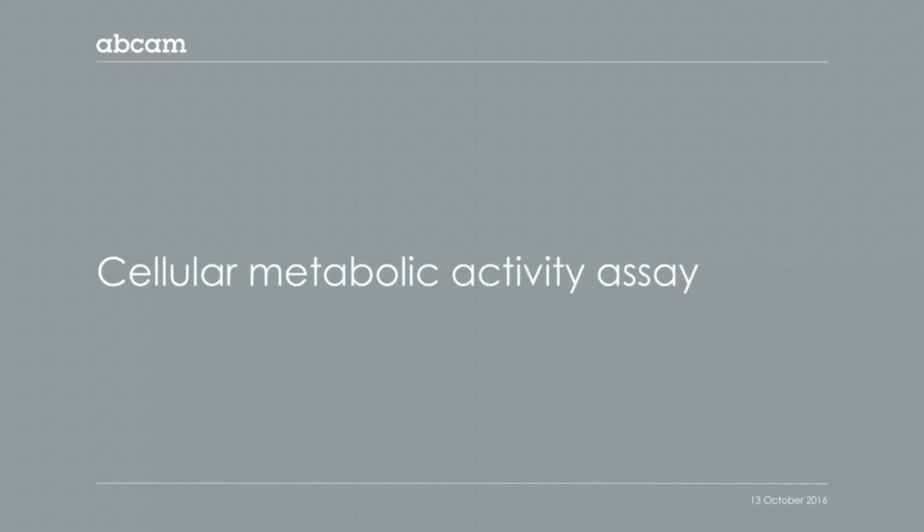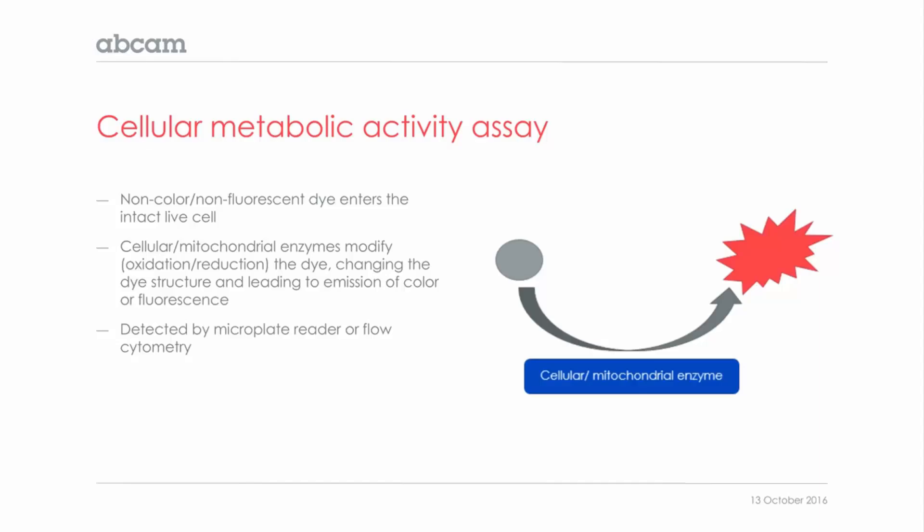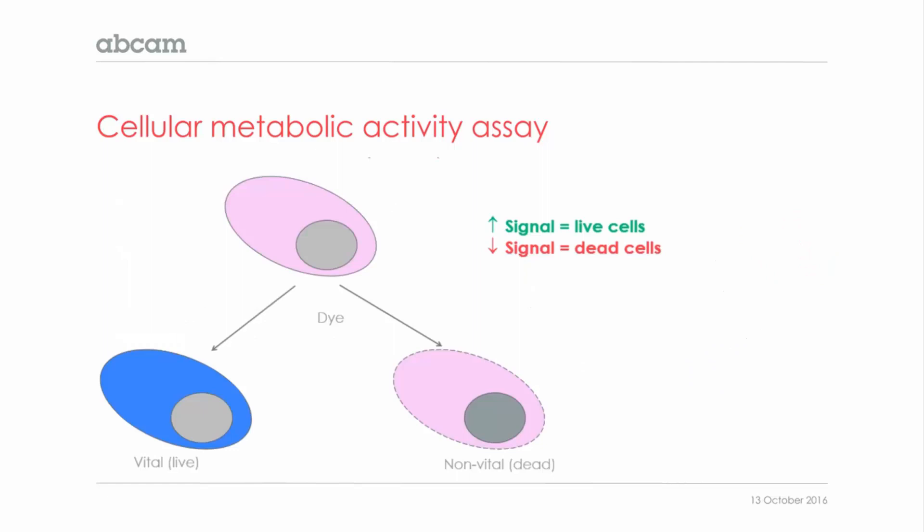How does the metabolic activity assay work? The detector molecule is added to the culture media and enters the live cells. Inside the cell, this dye is generally modified in the cytosol or the mitochondria so that it becomes fluorescent or changes color. This change can be detected either by microplate reader — fluorescence or absorbance — or by flow cytometry. When the dye is added to the culture, if the cell is dead or dying, the enzymes are not functional anymore and there will be lower or no signal. So a higher signal denotes live cells, whereas a lower signal means dying or dead cells.